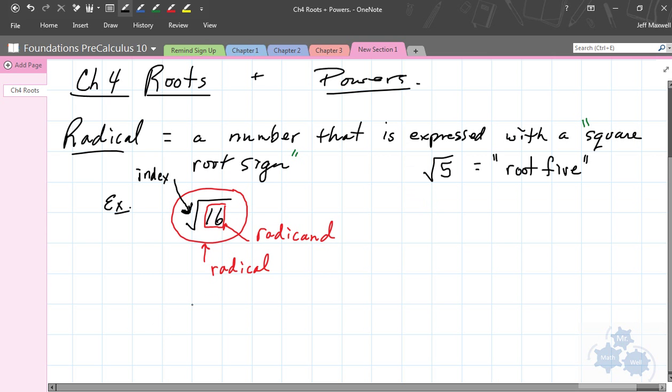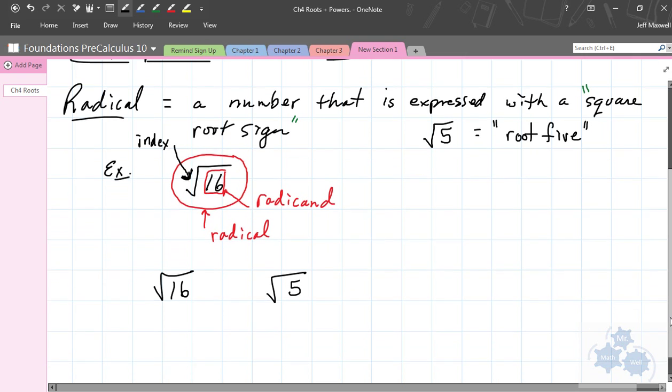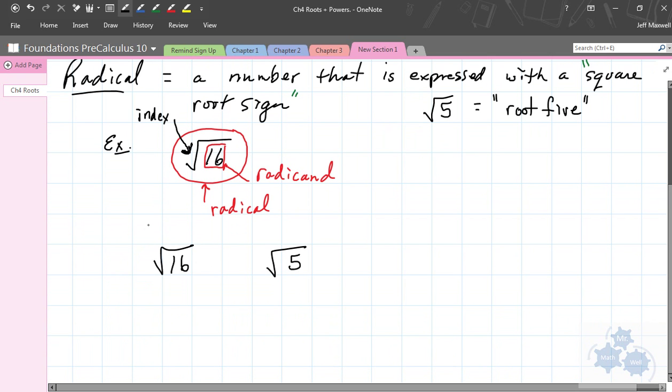If we compare root 5 and root 16, the square root of 16 has an exact value. What is the square root of 16? 4. The square root of 16 is 4. Now, 16 is a perfect square number, right? 4 is the square root of 16. We've already learned this.